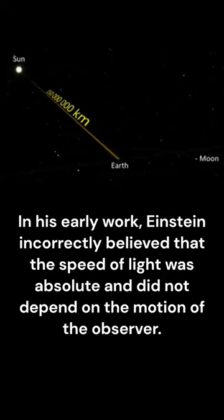In his early work, Einstein incorrectly believed that the speed of light was absolute and did not depend on the motion of the observer.